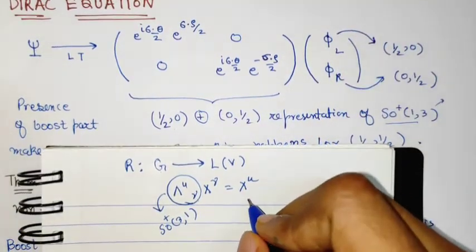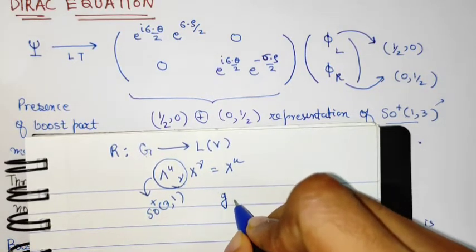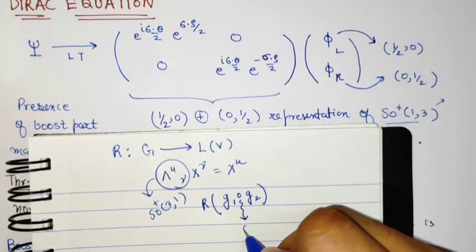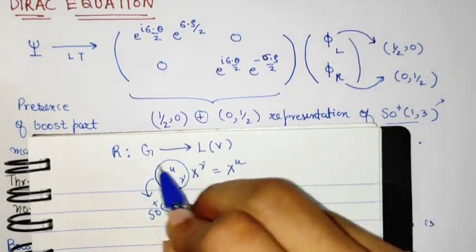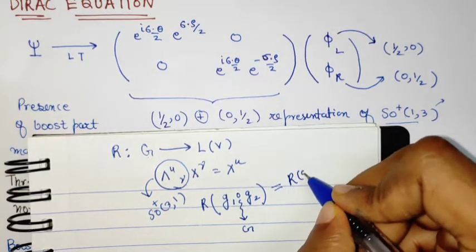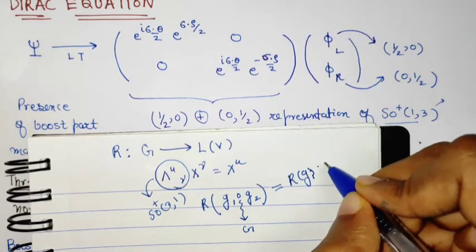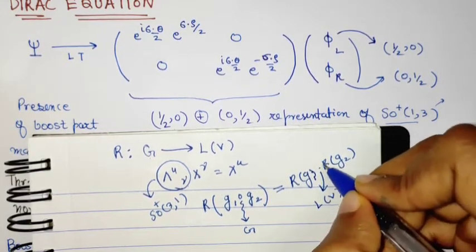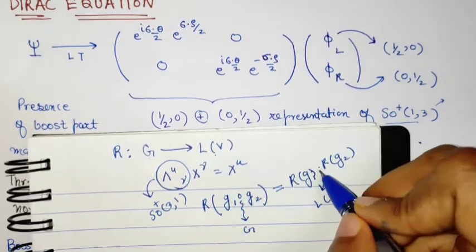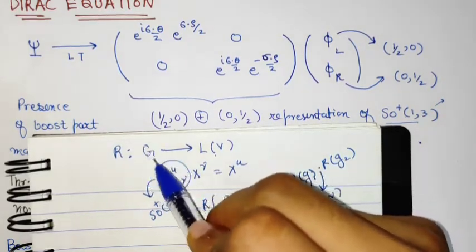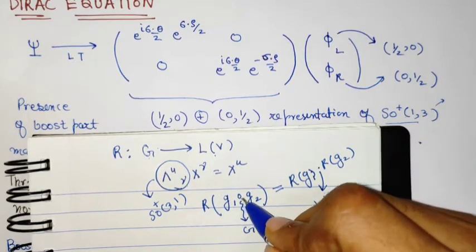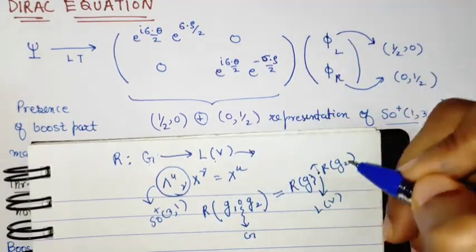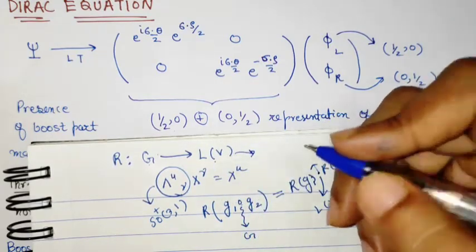One more thing regarding representations: if we have two group elements G1 and G2, then the representation of G1 composed with G2 — where this composition lies in the group — must satisfy the property that it equals the representation of G1 times the representation of G2. This multiplication is on the linear operator space, which is also a vector space. Linear operators form what we call an algebra, which is like a vector space over a ring, and the ring has a multiplication.